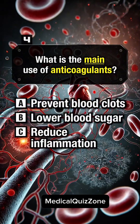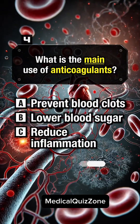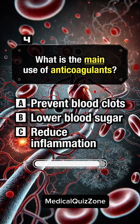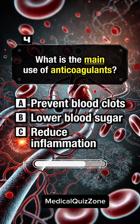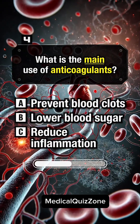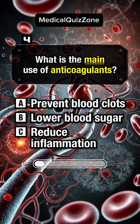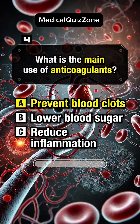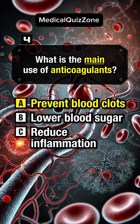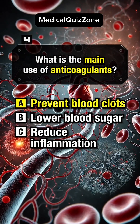What is the main use of anticoagulants? Answer A: Prevent blood clots.